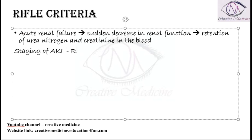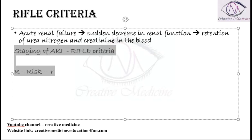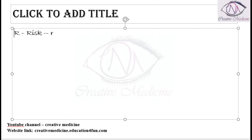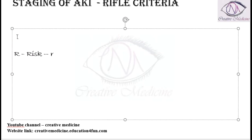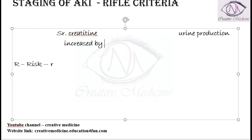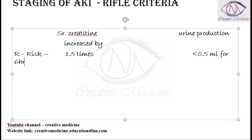The RIFLE criteria is mainly used for the staging of acute kidney injury. In the RIFLE criteria, R stands for Risk. We will assess two main parameters: serum creatinine and urine production. In Risk, the serum creatinine is increased by 1.5 times the normal.